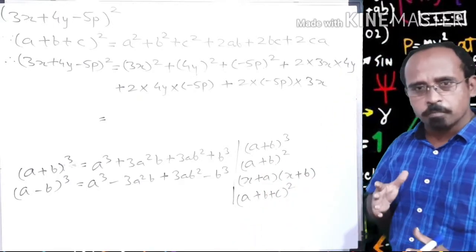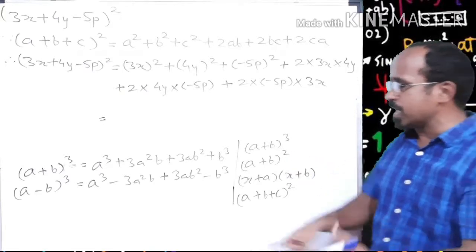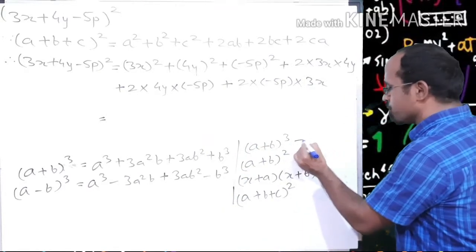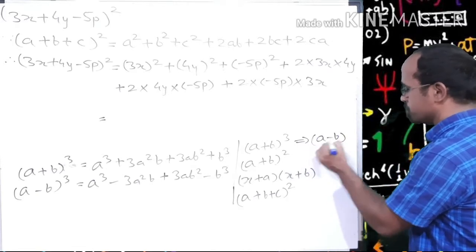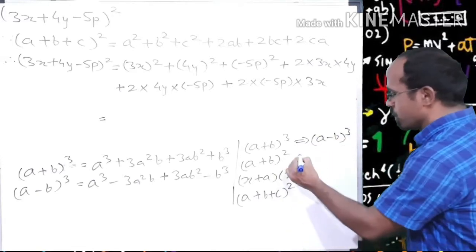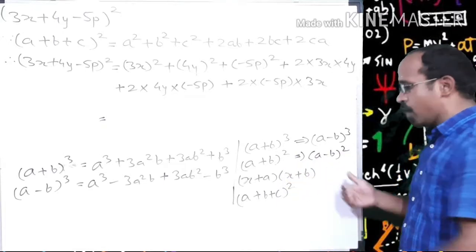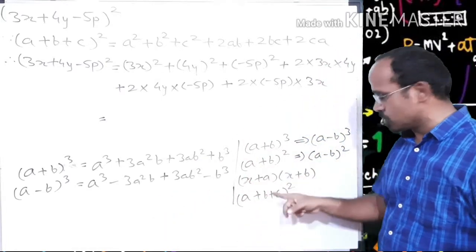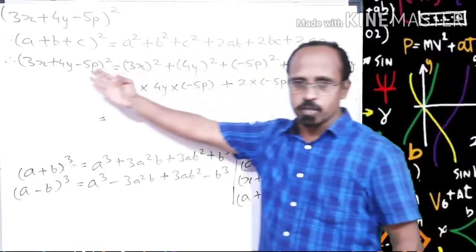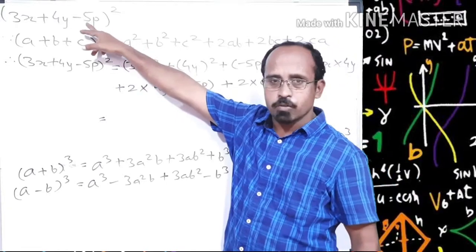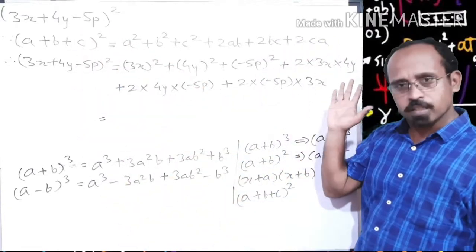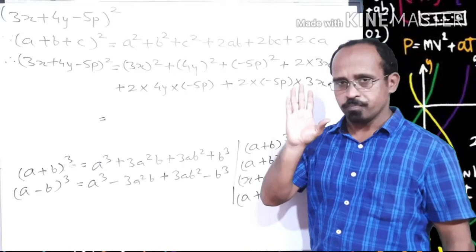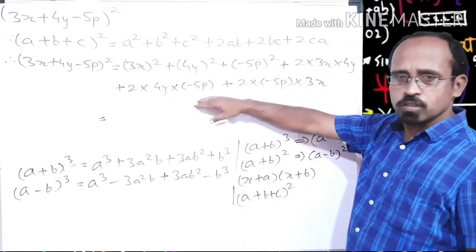For example, from (a + b)³ we can automatically derive (a − b)³. I will explain this in a separate video. For now, just remember: formulas with all plus symbols are general-purpose formulas, and when using them, if a negative term is present, we use that negative term directly. I will explain this after completing Practice 5.4 question one.